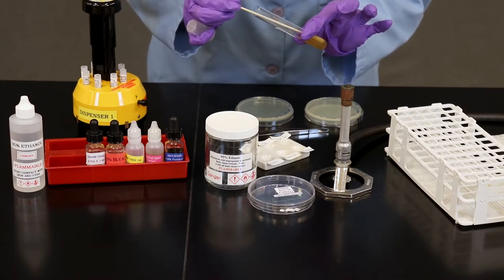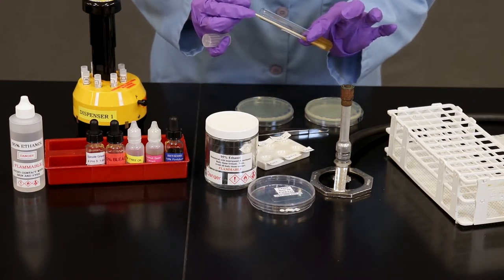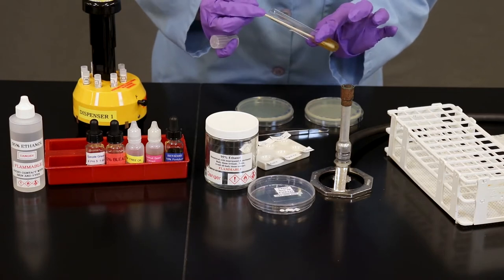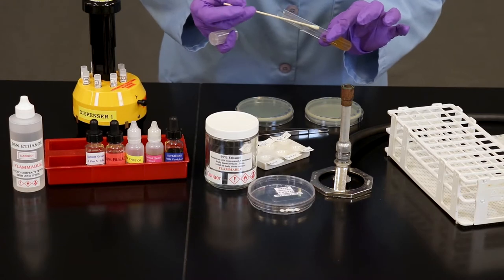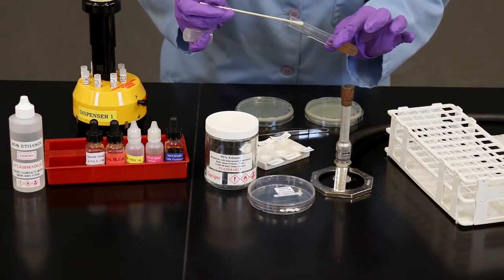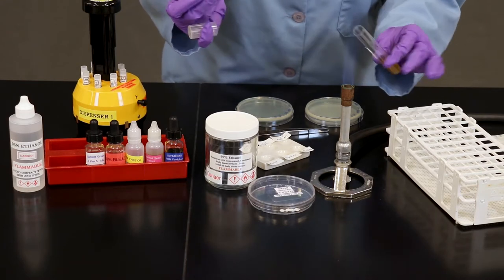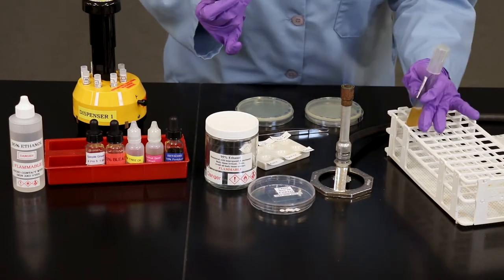Dip to saturate your cotton swab. You can let it sit a few seconds. Be sure not to stick your fingers into the test tube. Rub the side of the swab on the test tube so that you can get rid of any excess droplets. Pass the opening through the flame. Place down.